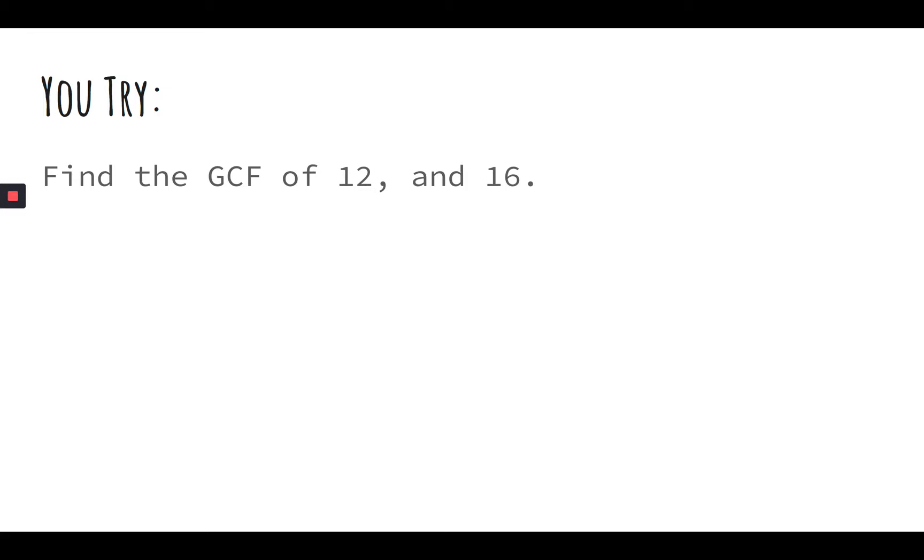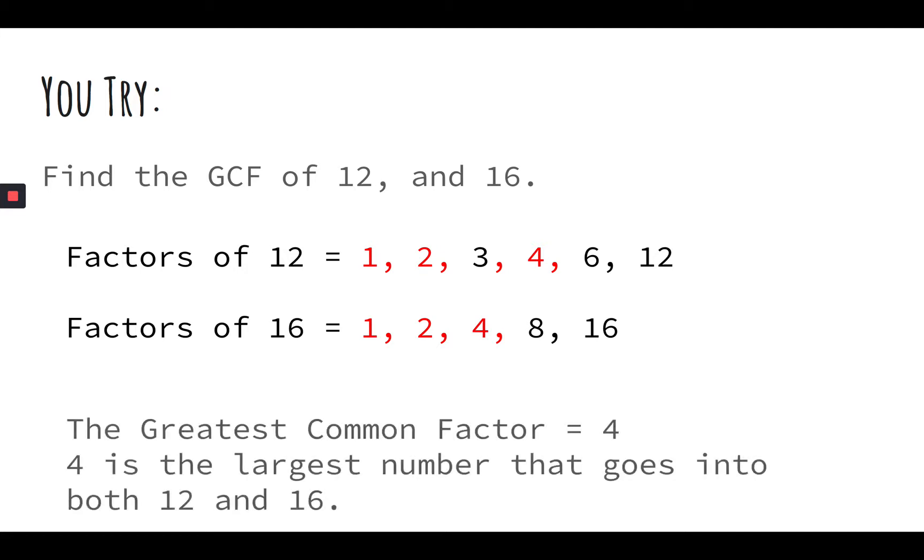Great. And before I continue, I want to remind you, you are watching a video. If you ever want more time to solve a problem where it says you try, you can always pause your video. Factors of 12 include 1, 2, 3, 4, 6, and 12. And factors of 16 include 1, 2, 4, 8, and 16. What this tells us is the greatest common factor of 12 and 16 is 4. The largest number that goes into both those two numbers, 12 and 16, is 4.